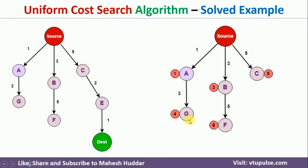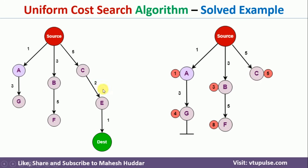At this point, G, F, and C are present in the priority queue. Out of these three, G has the minimum cost, but from G there are no other nodes, so we cannot explore further. We remove G from the priority queue and consider the remaining nodes, C and F. Between these two, C has the minimum cost, so we explore it.